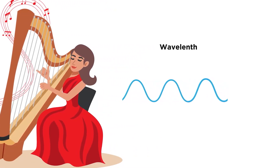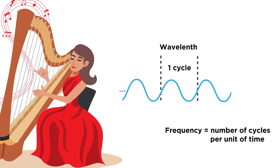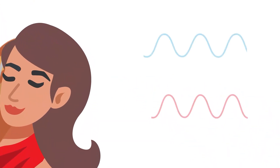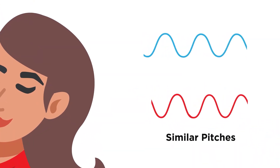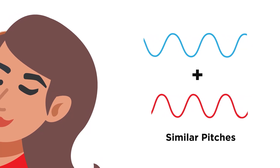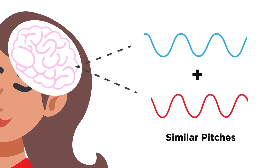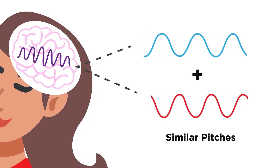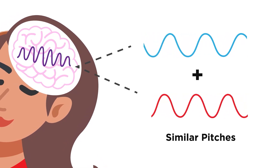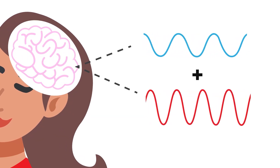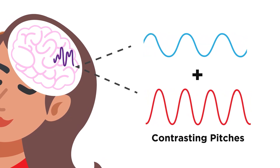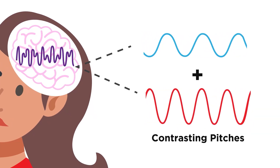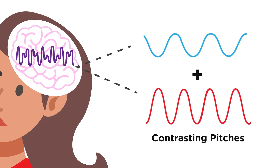In the auditory world, the two dimensions are frequency and time. Tones or bits of sound that are similar in pitch will tend to be grouped together by the brain as a stream or a melody or a continuous sound. If there's too big a jump between a pitch and the next one, it doesn't sound like they're connected as a kind of melody — it just sounds like two things happening that overlap in time.